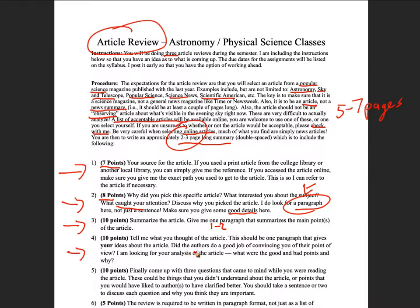The part students tend to skimp on is the analysis — what did you think of the article? Write one to two paragraphs telling me your ideas. Did you like or dislike the way they explained things? Either is fine, but tell me why with specific examples. I'm not asking you to evaluate the science itself, but how the authors presented it — was it too high a level, too low? Say things like 'in this part they explained this and I didn't understand it' and discuss why.